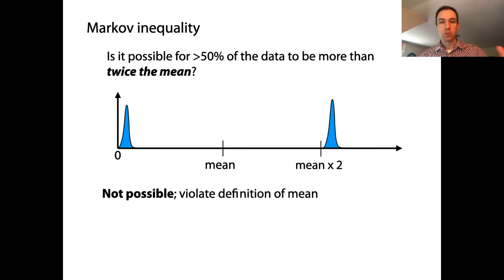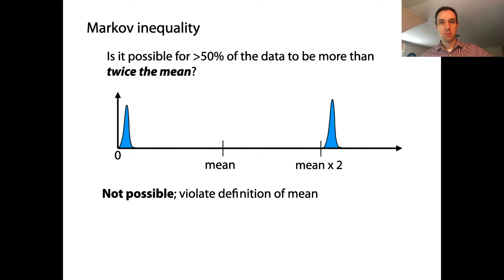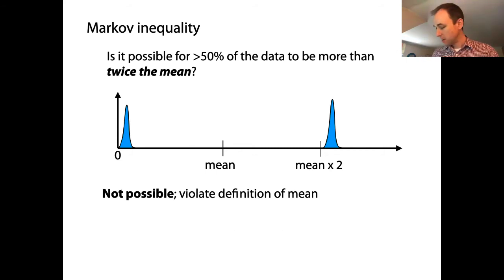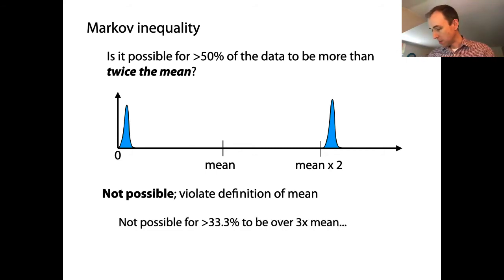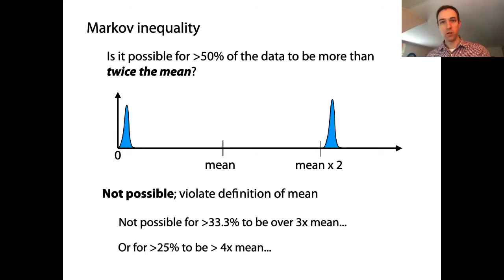Likewise, it's not possible for more than a third of the data to be more than three times the mean — same reason, it'll drag the mean higher. It's not possible for more than a quarter of the data to be more than four times the mean, and so on.